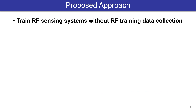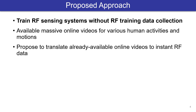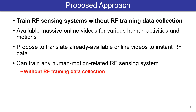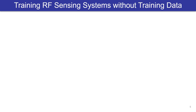In this paper, we show that this is indeed possible. More specifically, we show how to train a human motion-related RF sensing system without collecting any real RF data. We use online videos of human activities and translate them to simulated RF data. This allows us to train any human motion-related RF sensing system without real RF training measurements, while ensuring generalizability and robustness to environmental changes. Now let's see how we enable this.